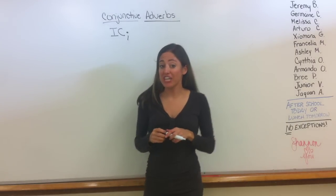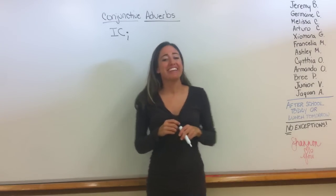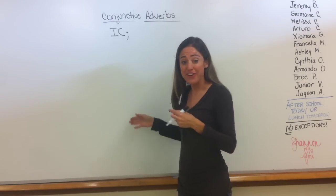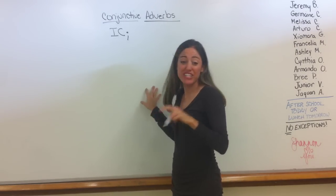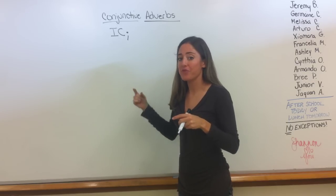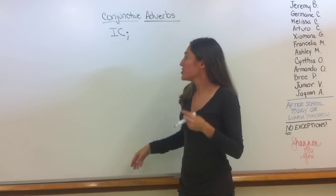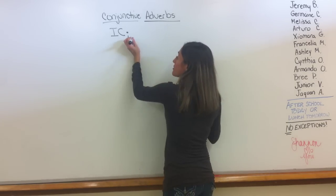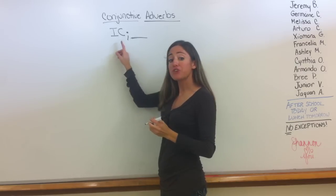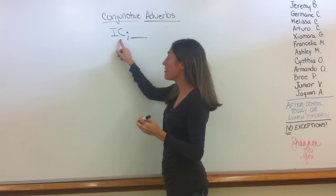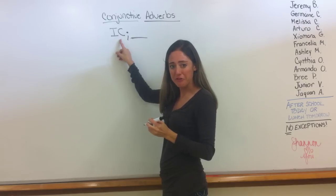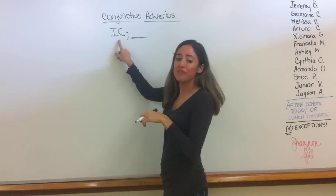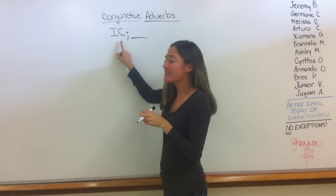So we left off discussing conjunctive adverbs. Yesterday you went through 10 of them, correct? Today we're just going to do a couple more, but I need to review with you. Remember, a conjunctive adverb is a word that comes right here. You start off with an independent clause. Make sure you are writing this in your notes after the 10 sentences from yesterday. Start off with an independent clause.